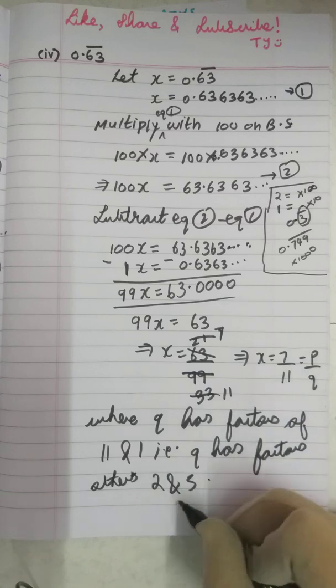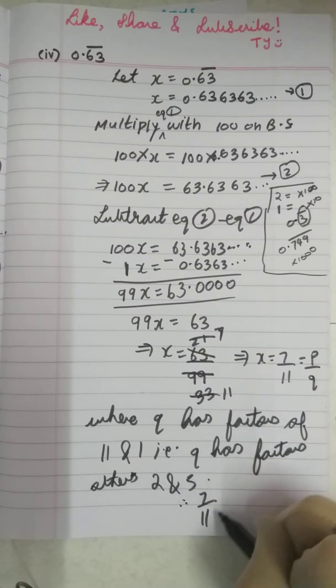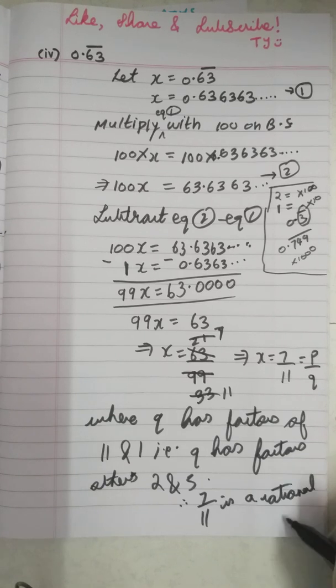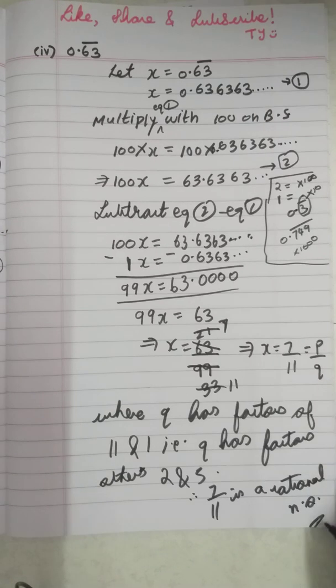That is why we observe that Q has factors other than 2 or 5. That is, Q has factors 11 and 1. So we can say that 7 by 11 is a rational number, but it will not have factors of 2 and 5. That is what we observe.